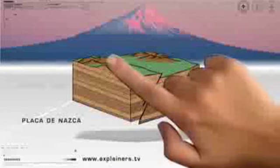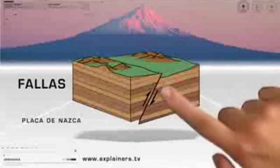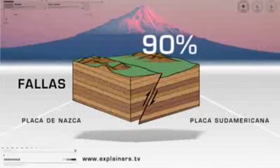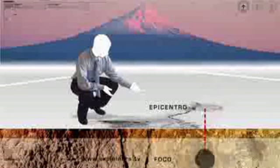Las bordes de estas placas se denominan fallas, y es aquí donde se originan el 90% de los terremotos. Su foco de inicio, llamado hipocentro, es el punto en la profundidad de la Tierra donde se libera la energía, y un epicentro, que es el punto de la superficie de la Tierra que está directamente sobre el hipocentro.